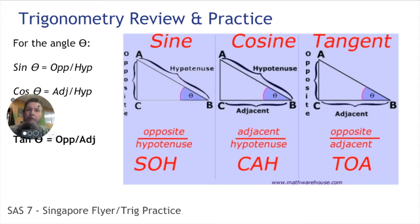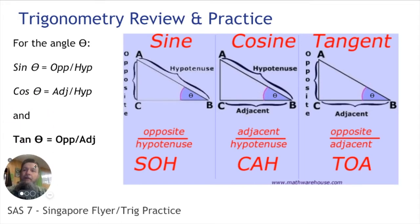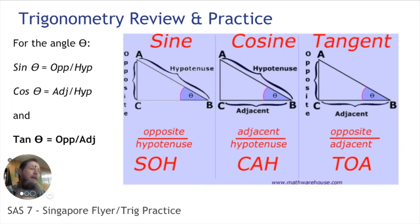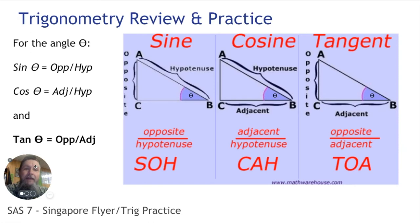All right, let's review trig. There are three trigonometric functions that we typically use — there are three others that are the opposite — but there are sine, cosine, and tangent. Sine, cosine, and tangent are of an angle, and that sine of an angle is the ratio between certain sides of a triangle that that angle happens to be in.